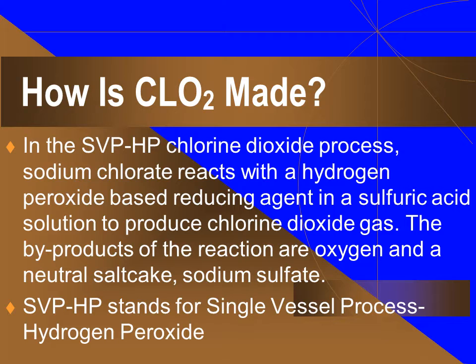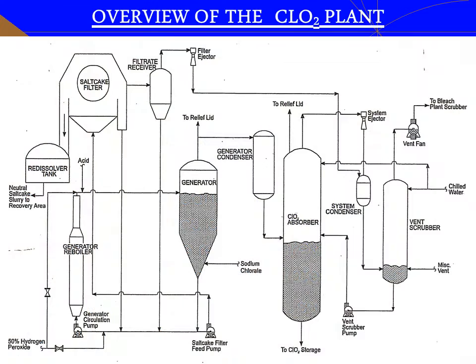SVPHP stands for single-vessel process hydrogen peroxide. To begin the chlorine dioxide process, generator liquor is pumped from the bottom of the generator to the reboiler. Sodium chlorate, hydrogen peroxide, and steam are added. From the reboiler, sulfuric acid is added on its way to the generator. After this, the reaction begins. The entire system operates under a vacuum for safety. The chlorine dioxide, evaporated water, oxygen, and other gases exit through the top of the generator where they next go to the generator condenser.